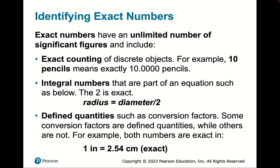Some numbers have an unlimited number of sig figs. Ten pencils, for instance, has an infinite number of significant figures — discrete counted numbers have infinite decimal precision. Integral numbers in equations also have infinite sig figs; for example, radius equals one half the diameter — that two is exact. Defined quantities like one inch equals exactly 2.54 centimeters have infinite sig figs; that 2.54 does not have just three sig figs.